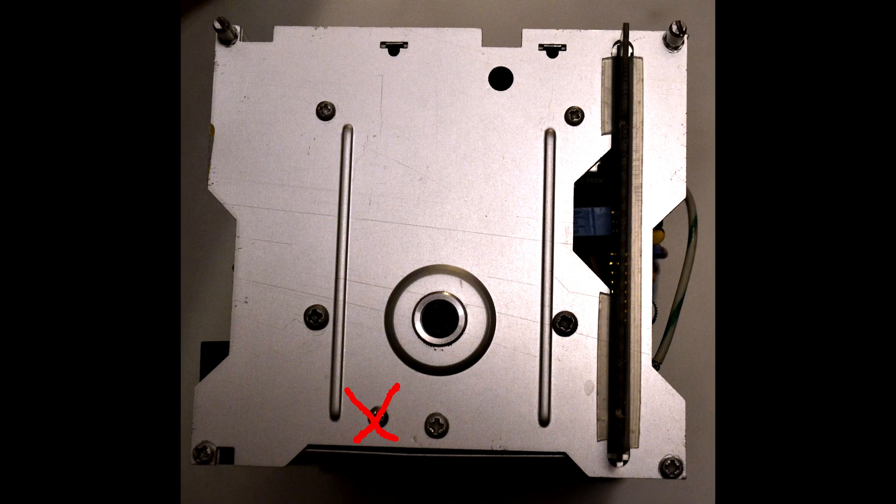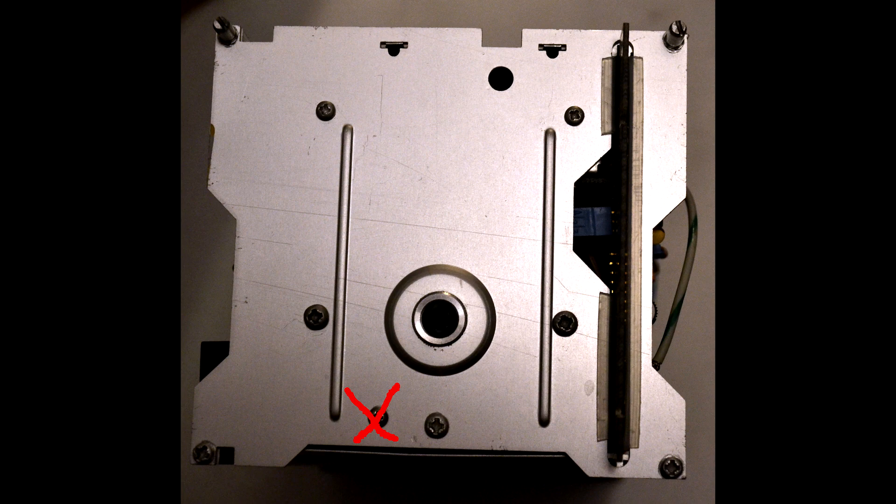Before removing the auxiliary board, remove the back panel. Remove nine screws from the back panel, but not the one marked here. It holds the pass transistor for the 5 volt supply.